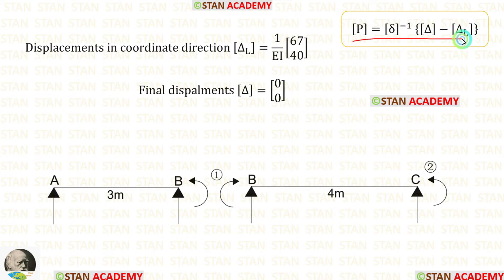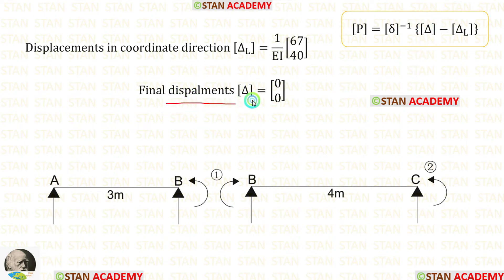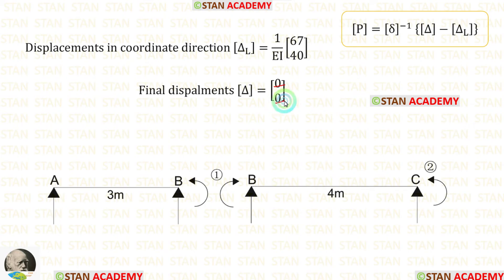We have now calculated the delta L matrix. Next, let us construct the delta matrix. Inside the delta matrix there will be two values. Both values are zero because in the given beam there is no overhanging.